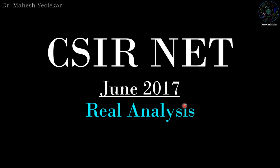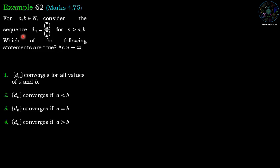Hello friends, this is Mahesh Yulikar and you are watching NextGenMass. In this video we are going to discuss a problem from CSIR NET June 2017 real analysis. For a, b belonging to N, consider the sequence dn equal to nCa divided by nCb, for n greater than ab. We have to determine which of the following statements are true as n approaches infinity. We have four options.